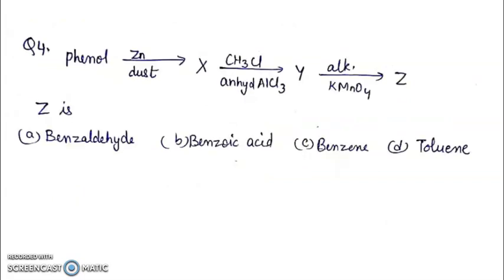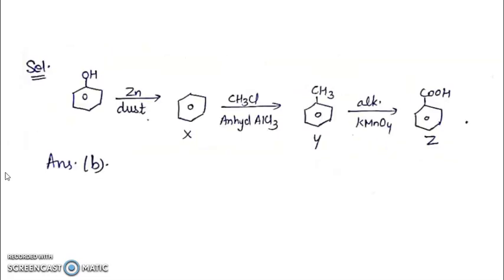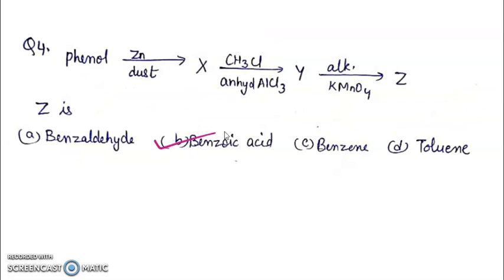Question 4: Phenol reacts with zinc dust to give X. X reacts with CH3-Cl and anhydrous AlCl3 to give Y. Y reacts with alkaline KMnO4 to give Z. This is also a series of reactions. Coming to the solution: Phenol when reacted with zinc dust forms benzene. Then Friedel Craft Alkylation reaction occurs, forming toluene. Toluene with alkaline KMnO4 forms benzoic acid. Right answer will be B, benzoic acid.